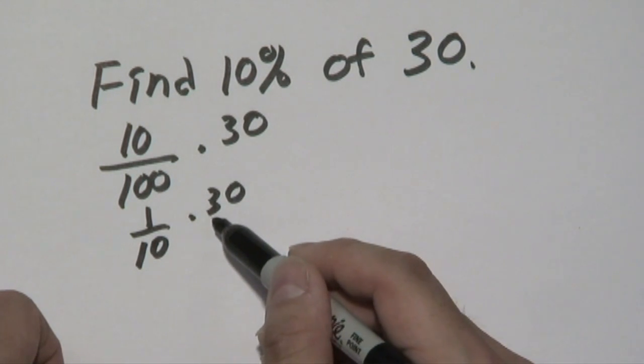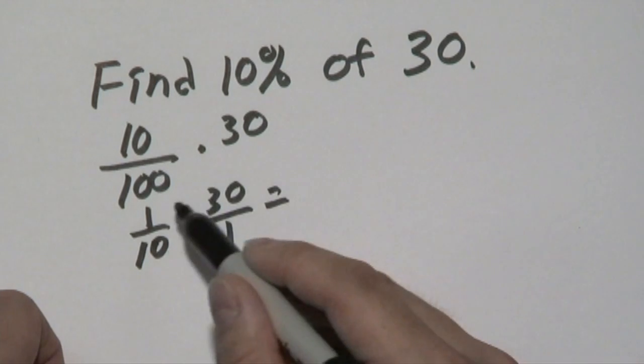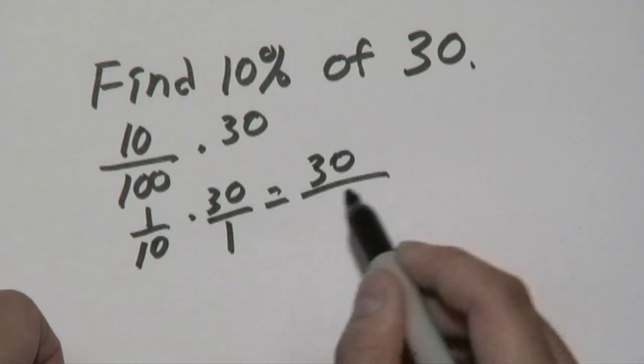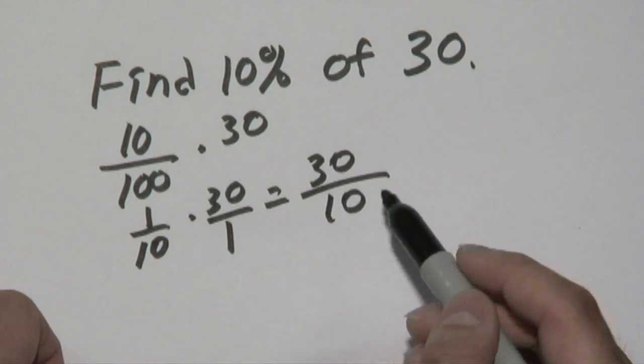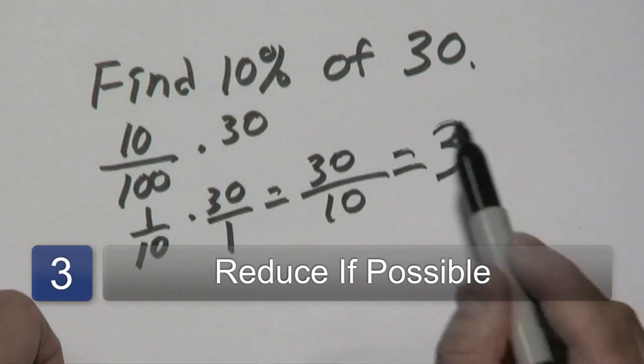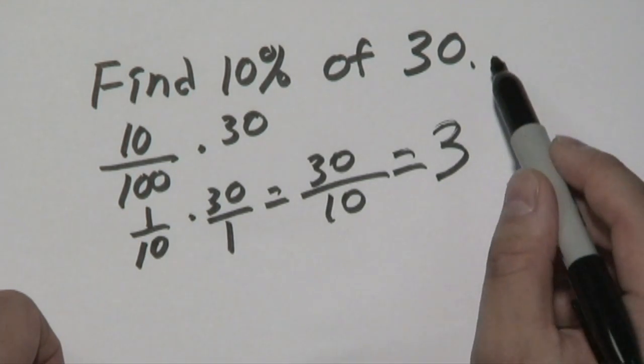If you want, you can think of 30 as a fraction also, 30 over 1. And one approach to solve this would be multiplying across. 1 times 30 is 30, and 10 times 1 is 10, and you have 30 over 10. But 30 over 10 reduces to 3. So that means 10% of 30 is going to equal 3.